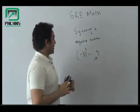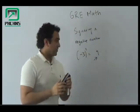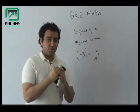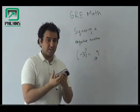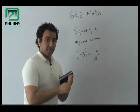Hello everyone, welcome to Peckin's. Squaring a negative number would always result in a positive number, as when you multiply two negative numbers they would always result in a positive number. So minus three in bracket squared would become nine.